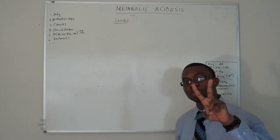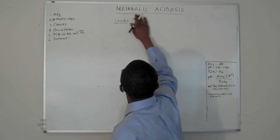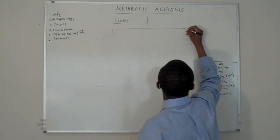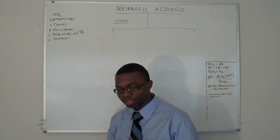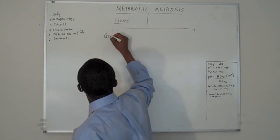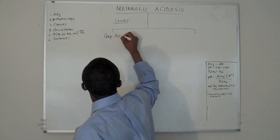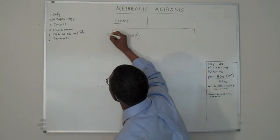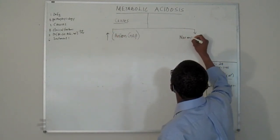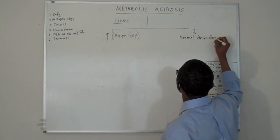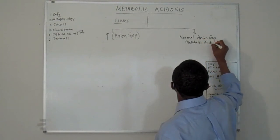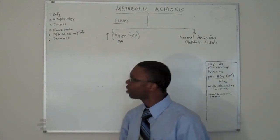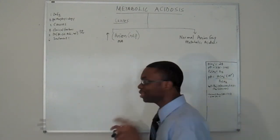Now, metabolic acidosis is divided into two parts. This is very important. I want you to listen very carefully. Let's just put causes right there. It's divided into two. I'm going to break them into two. The first one is called increased anion gap. And normal anion gap metabolic acidosis. Wait a minute. What is anion gap? That's a new term. I never talked about that before.